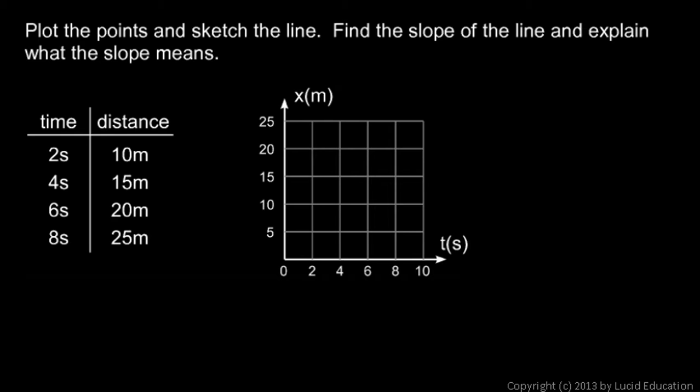And in this case, we've got a graph here. We don't have x and y axes. We have t down here, and that's time measured in seconds, and vertically we have x, which is position or distance measured in meters. We've got some values for time and distance in this table here. We're told to plot the points and sketch the line, find the slope of the line, and explain what the slope means. This will become clear as we do it. Let's first plot these points.